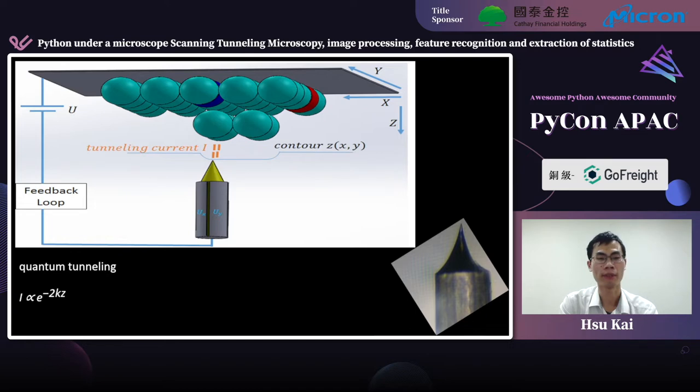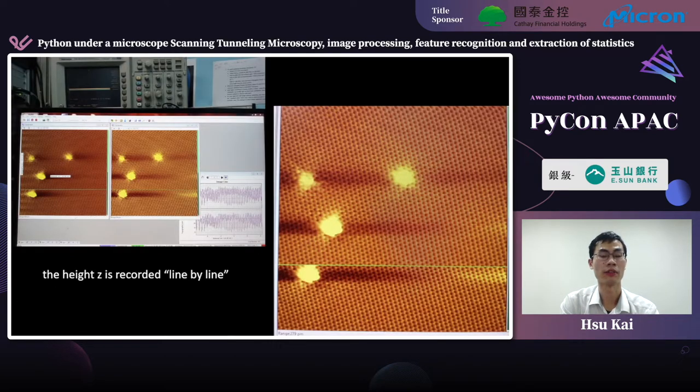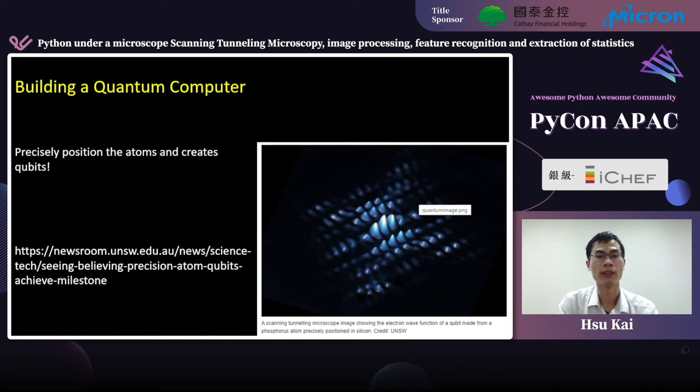So, in an STM, a sharp metallic tip is brought close to the sample, typically within the range of a nanometer, and the electrons tunnel through the vacuum barrier. The tunneling current depends on the tip-sample distance exponentially. So, by precisely controlling the tip-sample distance and the tunneling current, we can get a high-spatial resolution image after the tip is raster scanned over the sample. We can study the surface structure or any kinds of defects on the surface. STM can also fabricate specified structures by manipulating the atoms around precisely. An Australian group built the world's first quantum computer IC by precisely positioning the atoms.